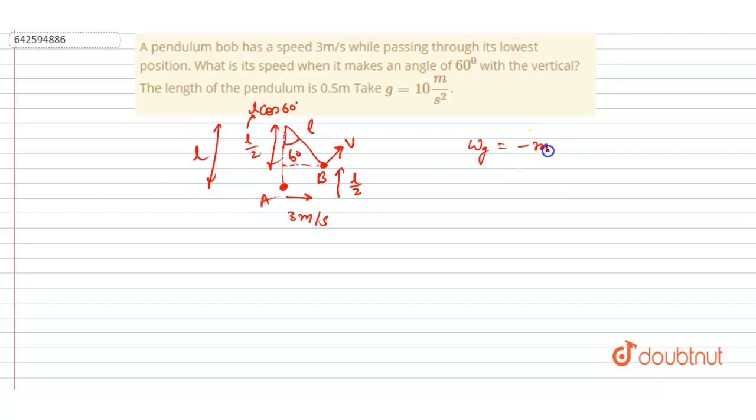is minus mg L by 2, equals to the change in kinetic energy, right? So let's suppose the final kinetic energy at B point is this, and at A point it is having the velocity of 3, so initial velocity is 3. And this is the - so m will get cancelled out here.